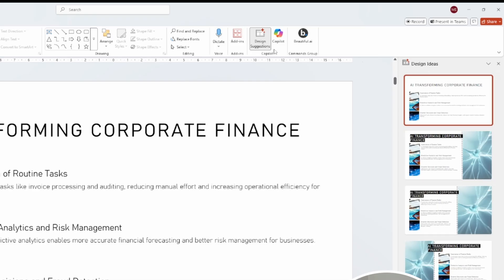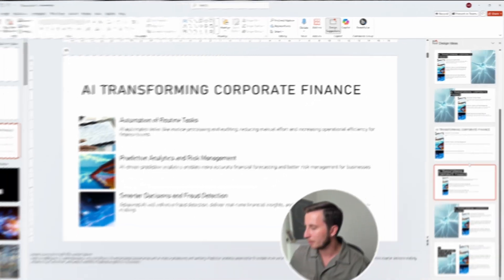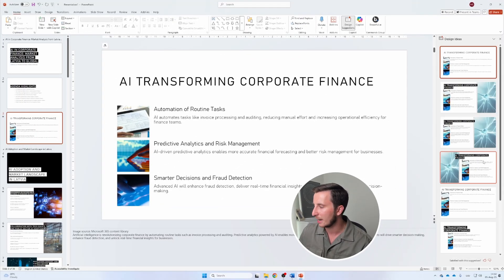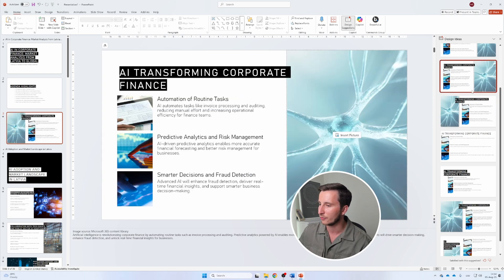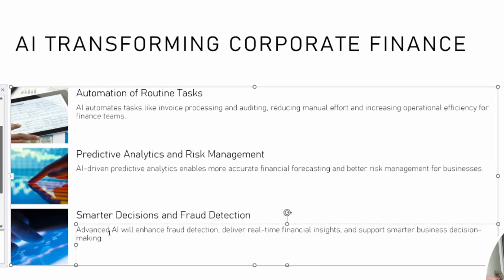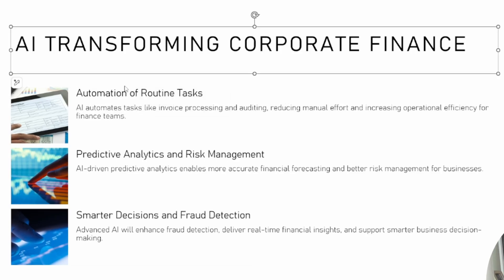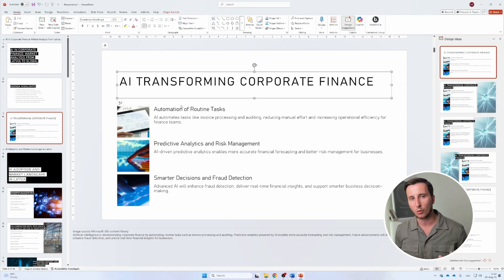There are also design ideas or design suggestions — this is an older feature not specific to Copilot, but it's an AI feature that handles placement of graphs or images you already have on slides. You can choose your preferred version. Note that when generating a slide from a general prompt without referencing a file, the information is what AI came up with itself — so you need to verify that data is accurate.